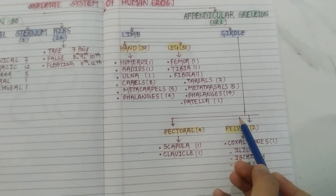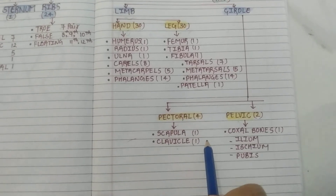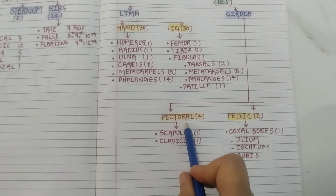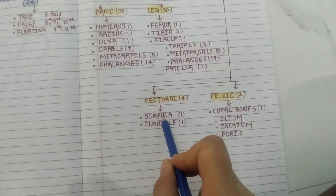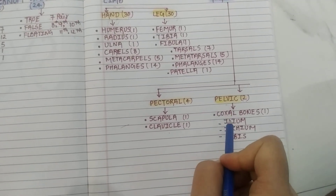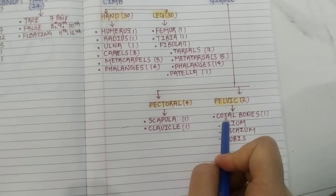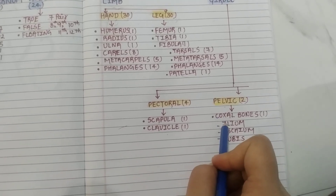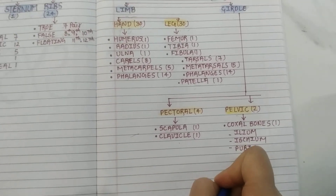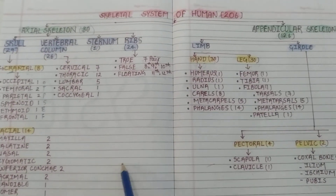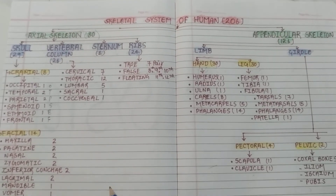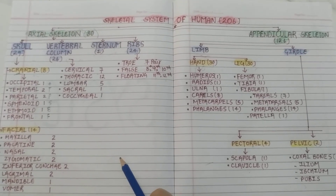The girdles are classified into two types: the pectoral girdle and the pelvic girdle. The pectoral girdle has 2 bones: scapula and clavicle. The pelvic girdle has coxal bones — 3 fused bones on each side. After calculating each and every bone, the total comes to 206 bones.